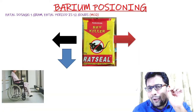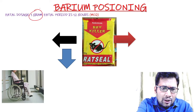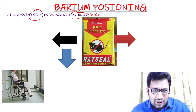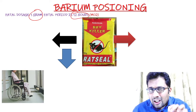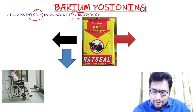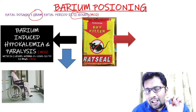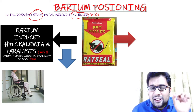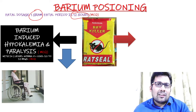What are the important clinical features? The fatal dosage is 1 gram, and the fatal period is around 12 hours. The very important clinical feature is hypokalemia. Hypokalemia leads to barium-induced paralysis. You can see here barium-induced hypokalemia and paralysis within 2 hours. Normal potassium level is 3.5 to 5.5 milliequivalents per liter.